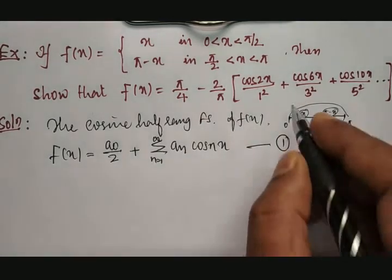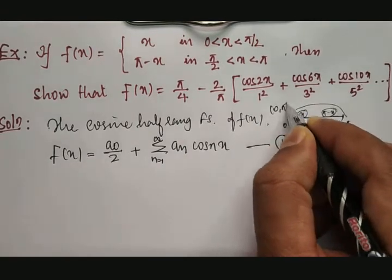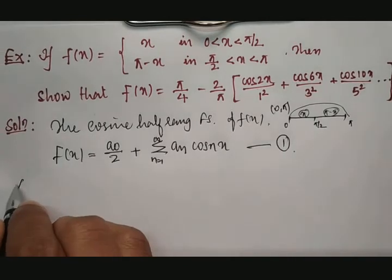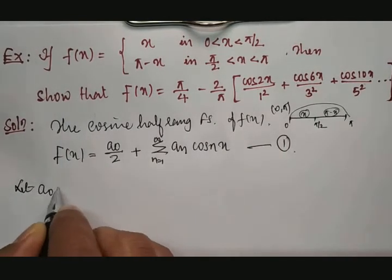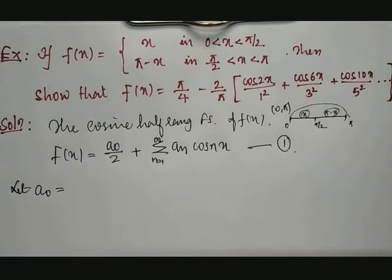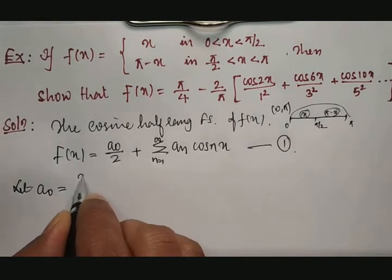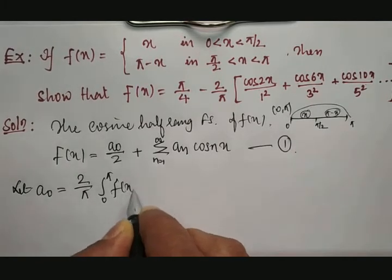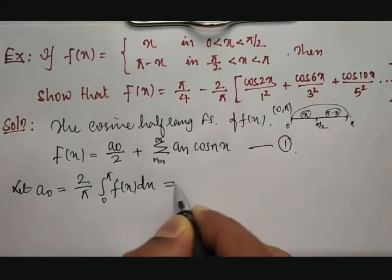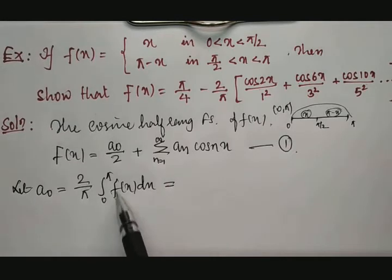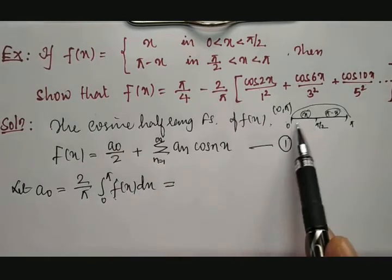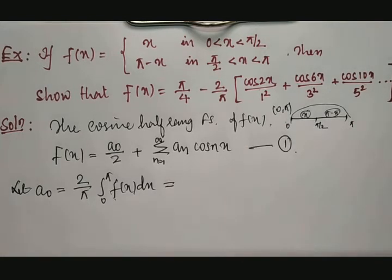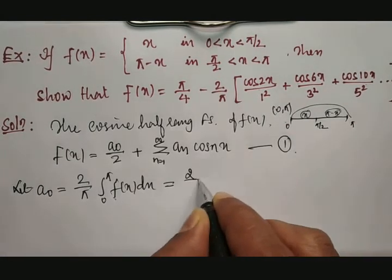The half range Fourier series of f of x is given by f of x equal to a naught by 2 plus summation from n equal to 1 to infinity of a_n into cos nx — equation number 1. We need to obtain the cosine half range Fourier series, as identified from the required expansion. Between 0 to pi, we need to calculate a naught and a_n.